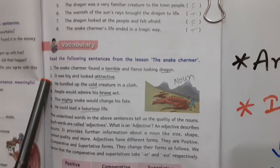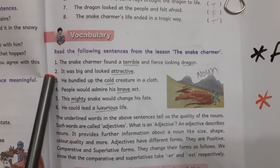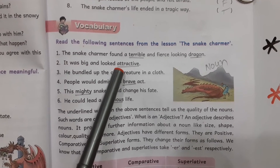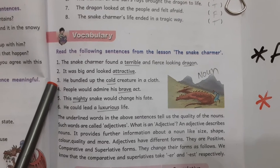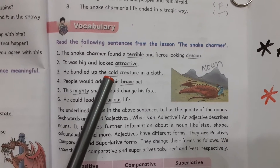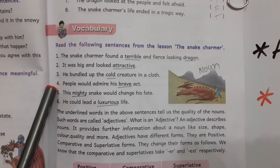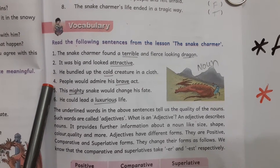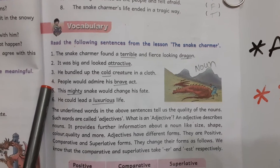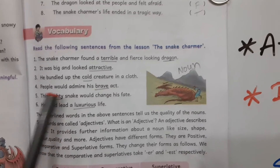Second example: It was big and looked attractive. He bundled up the cold creature in a cloth — 'cold' is the adjective here. People would admire his brave act — 'brave' is the adjective.